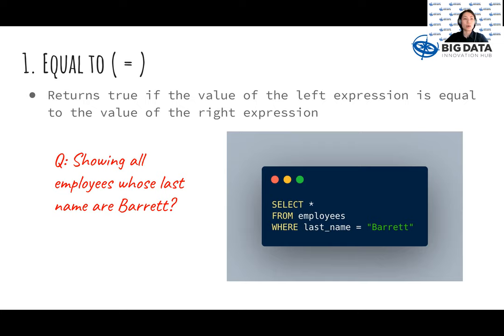Here shows an example where we use equal to to filter out the data where the last name is Bard from the employees table.